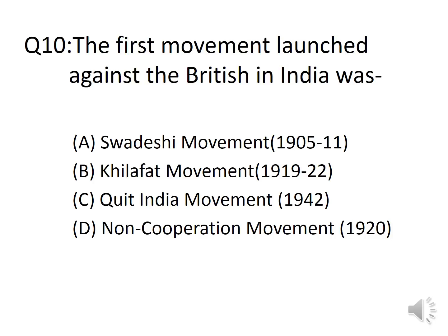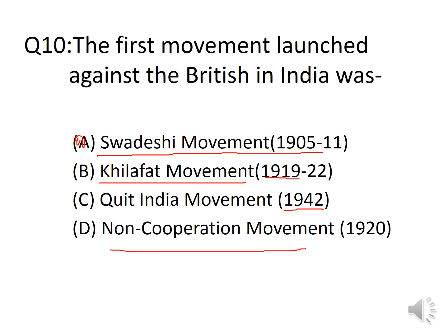Question 10: The first movement launched against the British in India was: A. Swadeshi Movement, B. Khilafat Movement, C. Quit India Movement, D. Non-Cooperation Movement. The answer is Option A, Swadeshi Movement. The formal declaration was made on 7 August 1905 at a meeting in Kolkata Town Hall. The Khilafat Movement started in 1919 and continued up to 1922. The Quit India Movement started on 8 August 1942. The Non-Cooperation Movement started in 1920.